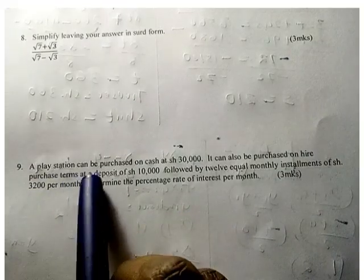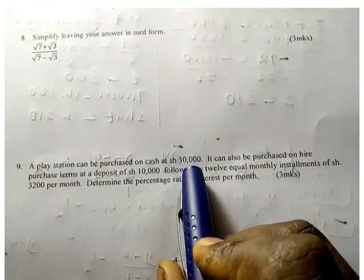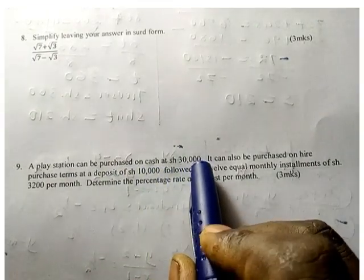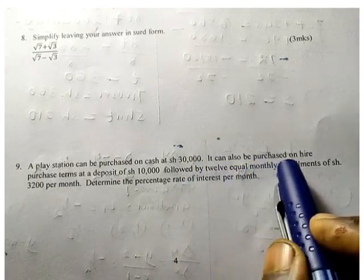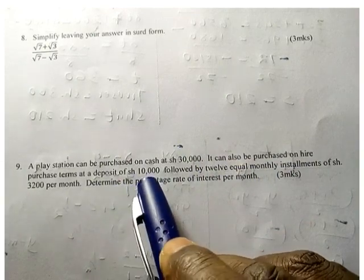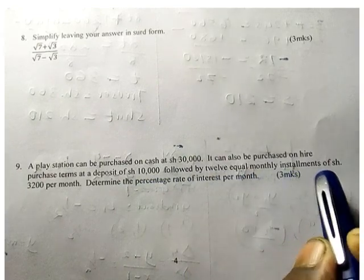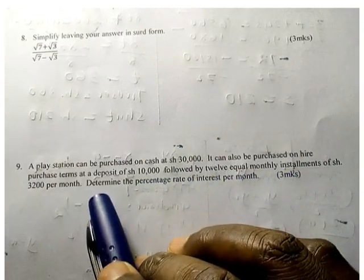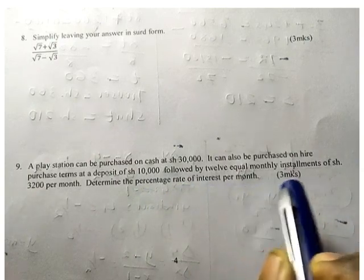A PlayStation can be purchased on cash at Kenya shillings 30,000. It can also be purchased on hire purchase terms at a deposit of shilling 10,000, followed by 12 equal monthly installments of Kenya shillings 3,200 per month. Determine the percentage rate of interest per month.